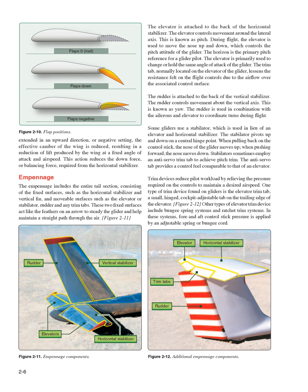The elevator is primarily used to change or hold the same angle of attack of the glider. The trim tab, normally located on the elevator of the glider, lessens the resistance felt on the flight controls due to the airflow over the associated control surface. The rudder is attached to the back of the vertical stabilizer. The rudder controls movement about the vertical axis, known as yaw. The rudder is used in combination with the ailerons and elevator to coordinate turns during flight. Some gliders use a stabilator, which is used in lieu of an elevator and horizontal stabilizer. The stabilator pivots up and down on a central hinge point. When pulling back on the control stick, the nose of the glider moves up; when pushing forward, the nose moves down. Stabilators sometimes employ an anti-servo trim tab to achieve pitch trim. The anti-servo tab provides a control feel comparable to that of an elevator.